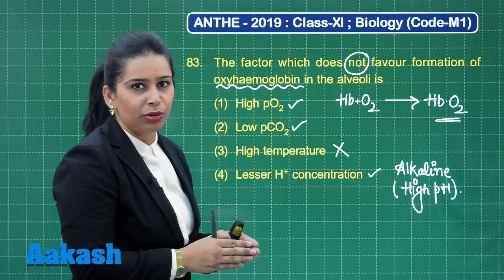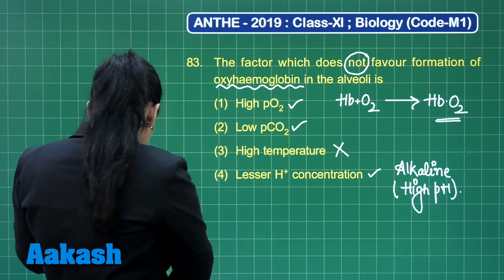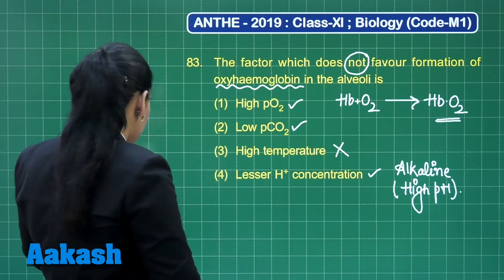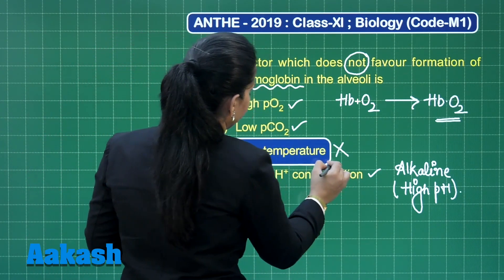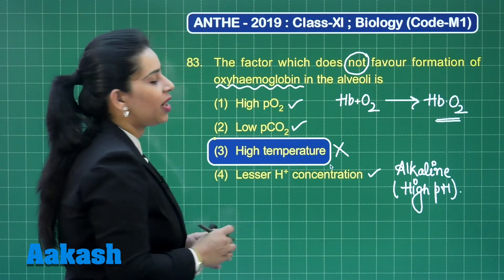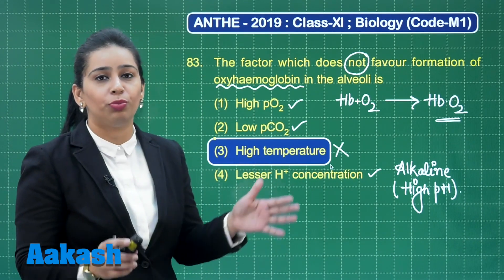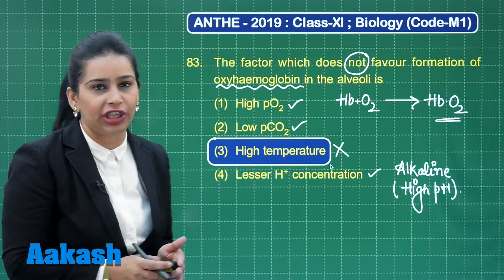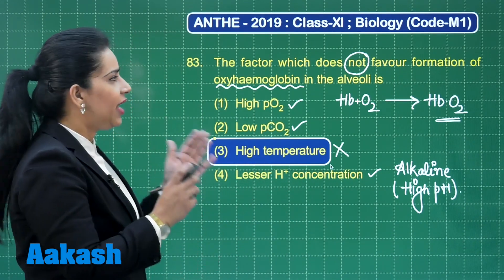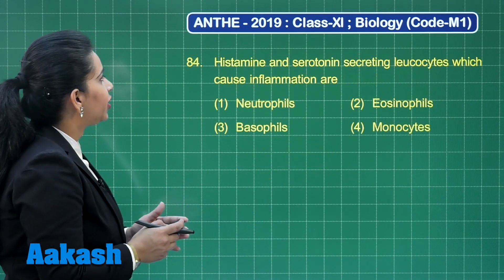Lesser hydrogen ion concentration is also going to promote their binding. So the correct answer to this question is option number 3 — high temperature — as this is going to promote the dissociation of oxyhemoglobin.